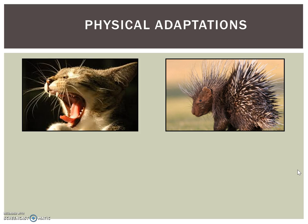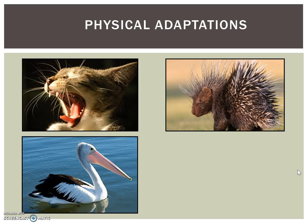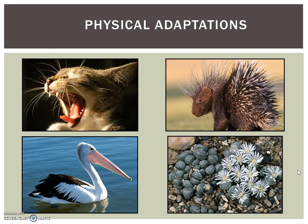Physical adaptations are physical features of an organism. For example, the shape of a wing, the number of legs, the color or pattern of the fur, the shape and size of a bird's bill, the size and shape of an animal's teeth, or the shape and color of a flower — all directly contribute to a species' ability to survive.